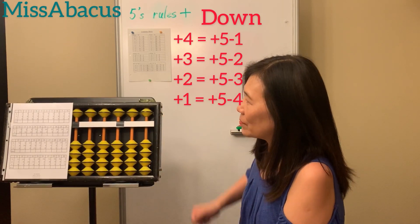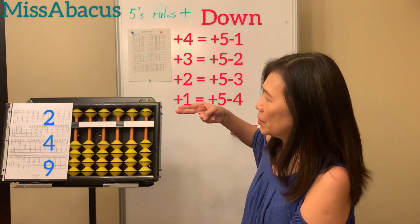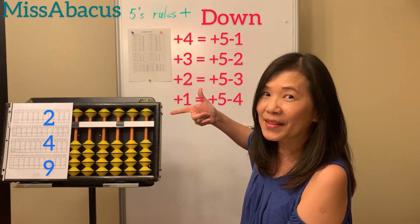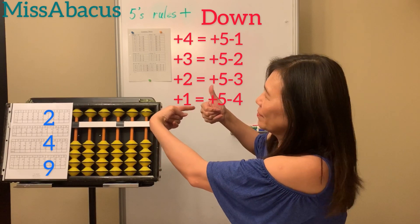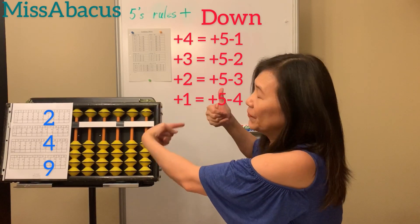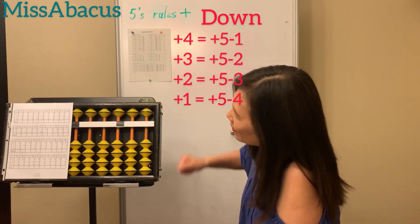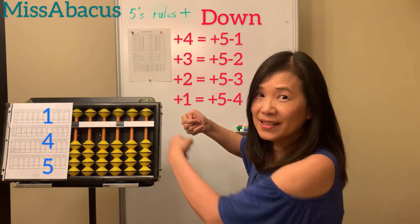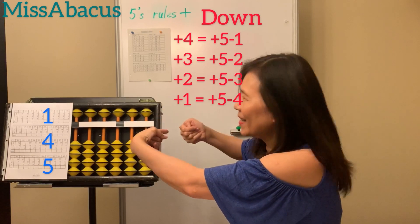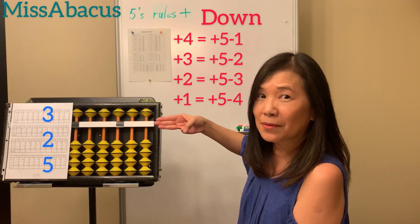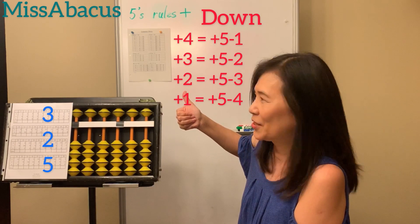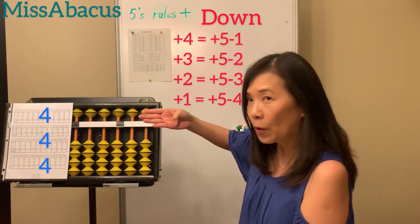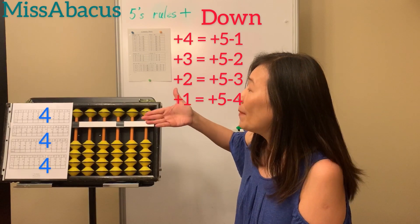Let's do number seven: two plus four — use the five, five minus one, that's four. Plus nine: tens rule, minus one plus ten. Answer fifteen. Number eight: one plus four — five minus one, four. Plus five: minus five plus ten. Answer ten. Number nine: three plus two — five minus three, that's two. Plus five: minus five plus ten. Answer ten again.